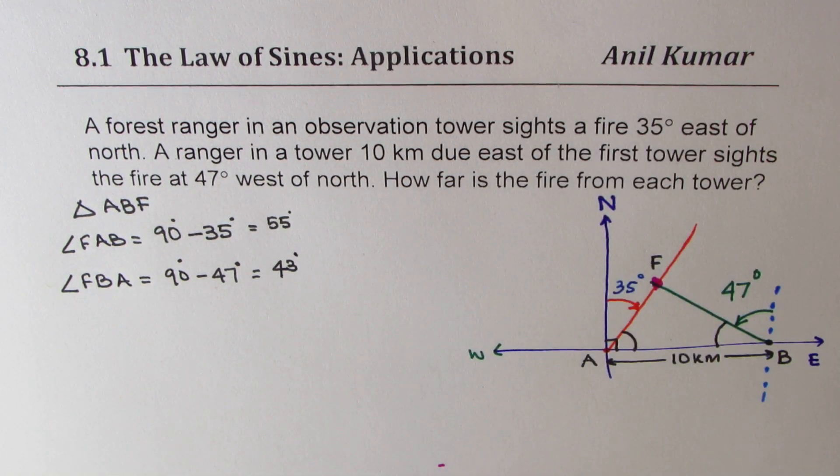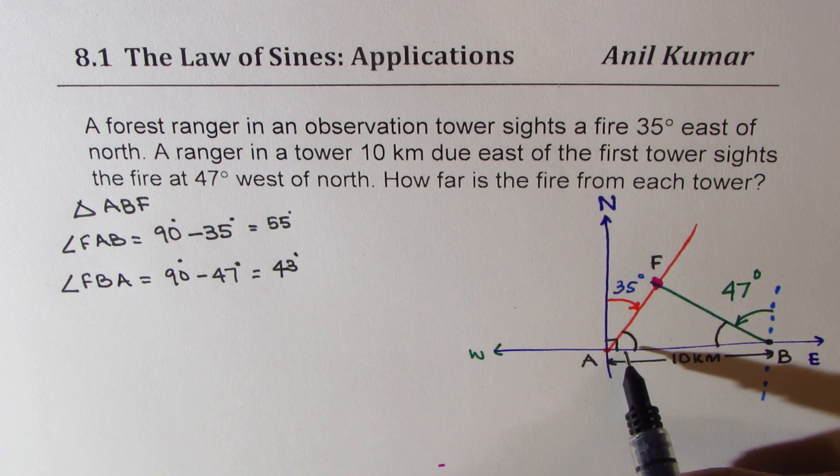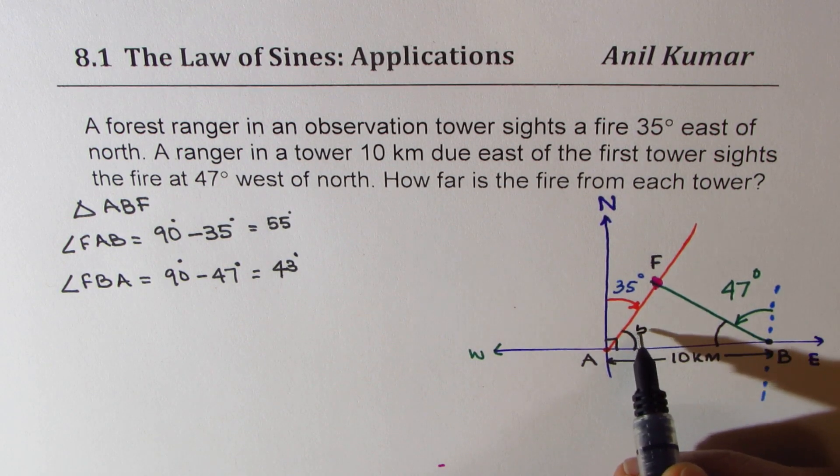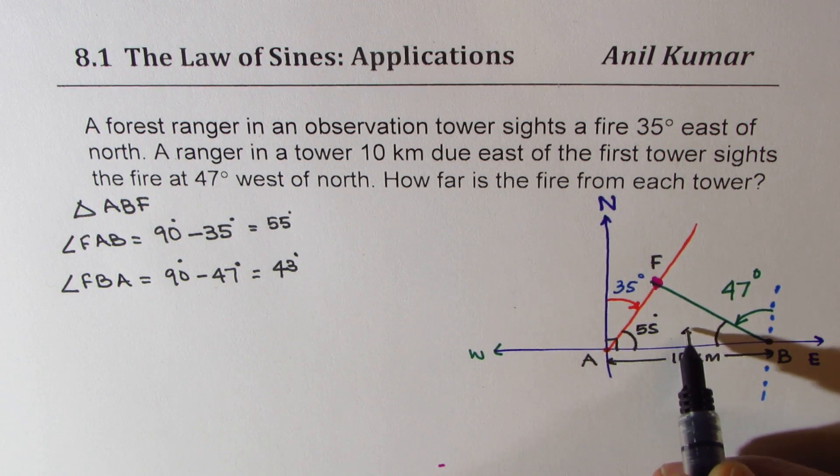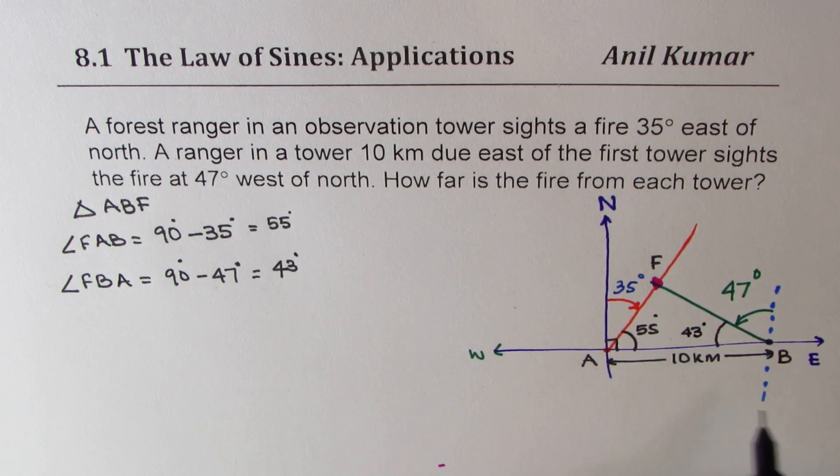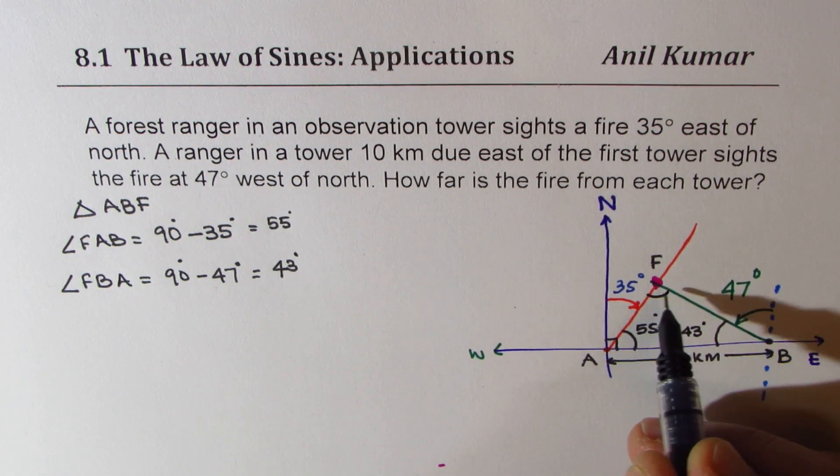So now we have our triangle where the angle at A is 55 degrees and at B is 43 degrees. You can find the angle at F also.